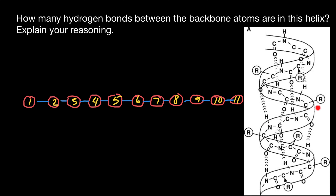Those at the C-terminus also have only carboxylic groups exposed for hydrogen bonding, and the amino group has no other groups to bond with. Only those amino acids in the middle would have two hydrogen bonds — one peptide bond in the middle of the alpha helix gives two hydrogen bonds.